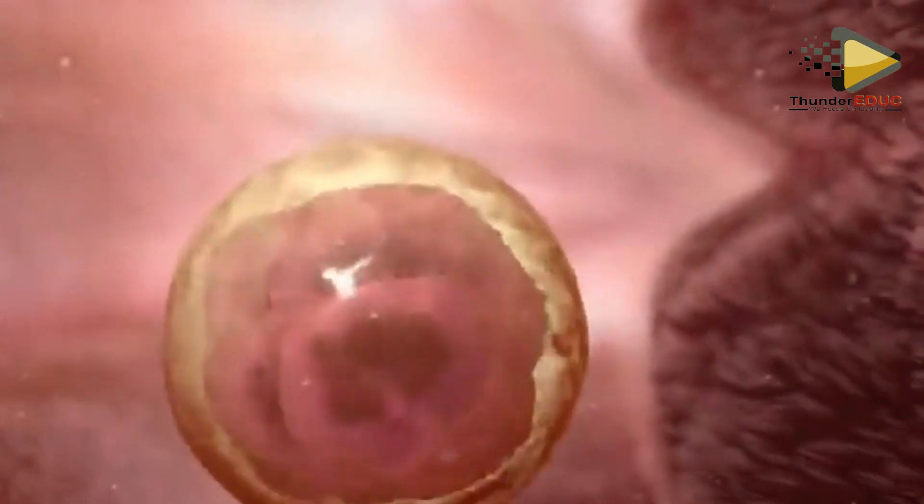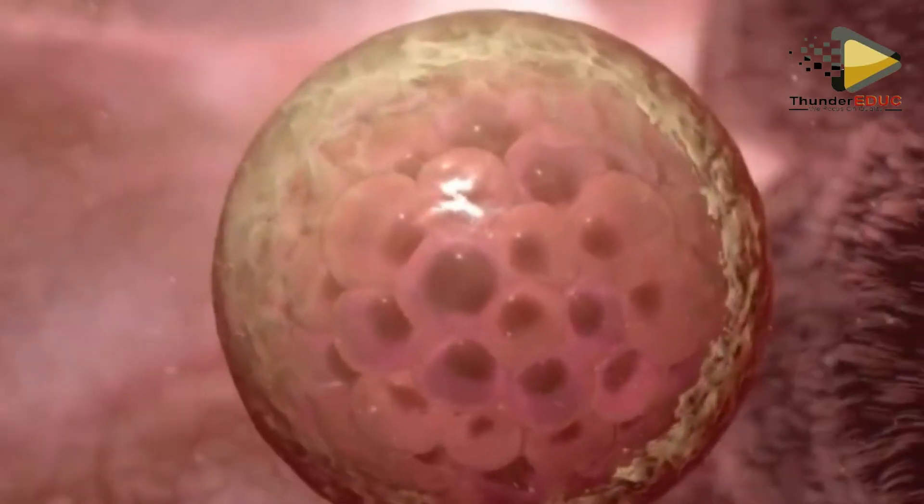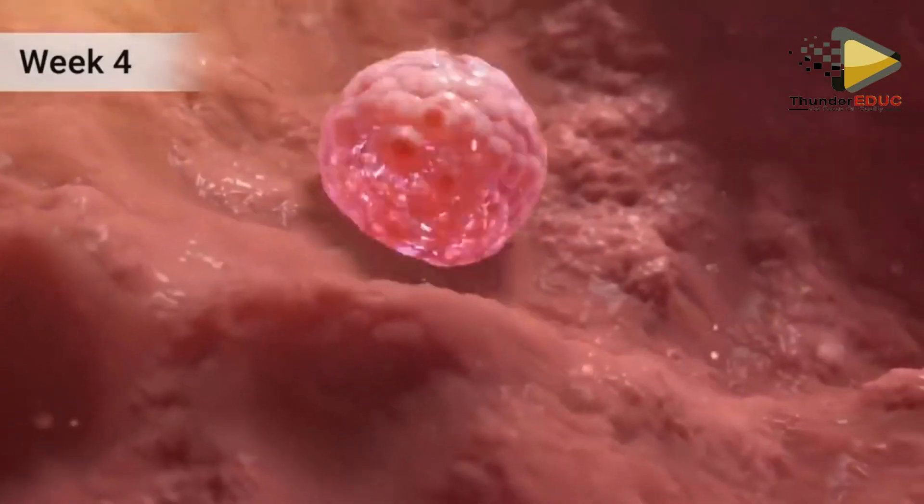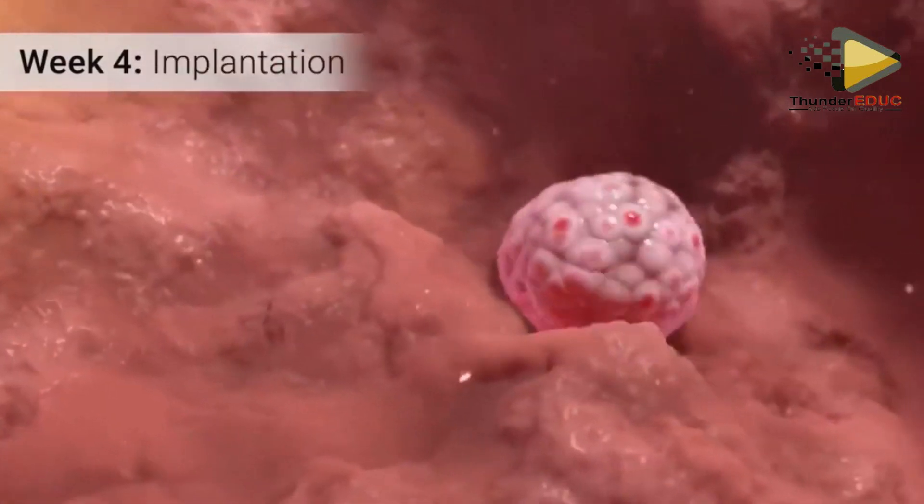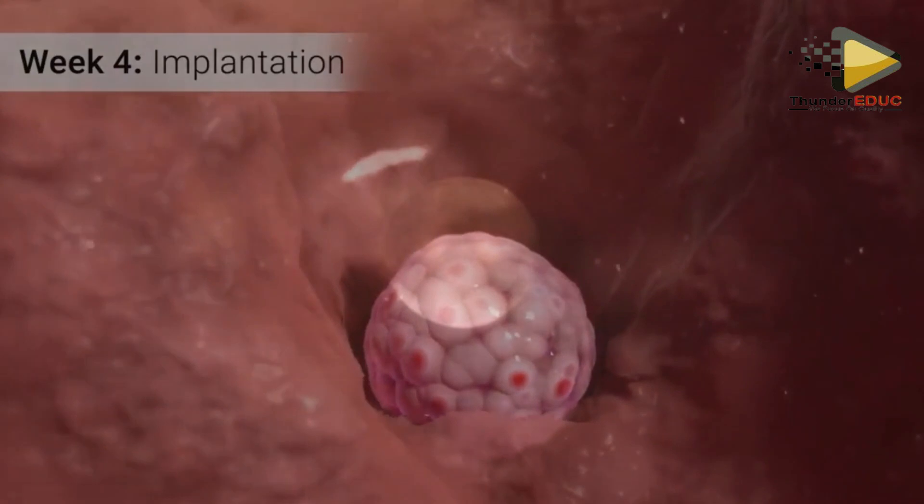It becomes a zygote which divides by mitosis to form a ball of cells called morula, and then later forms a blastula.